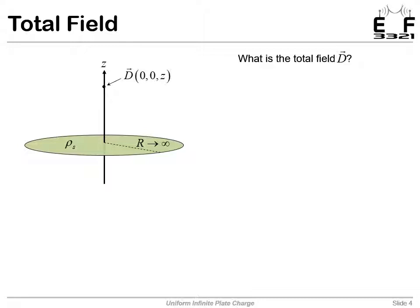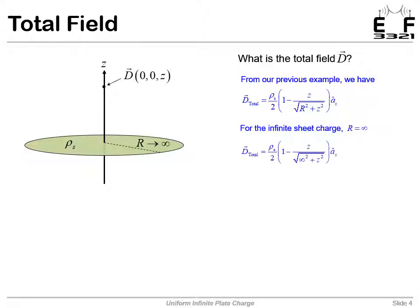So what is the total field? Well, this was our original expression for the field from a finite circular plate. For the infinite plate, R goes to infinity. So we plug in infinity in the denominator here. That makes the denominator a very large number, infinite. And so any number divided by infinity goes to zero. So in fact, that term vanishes.